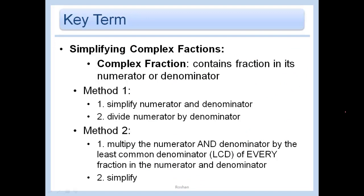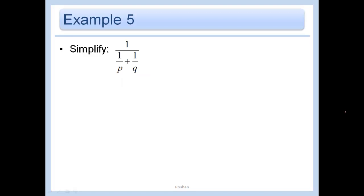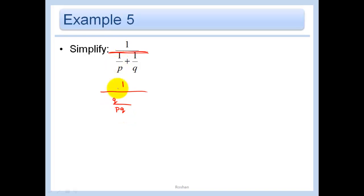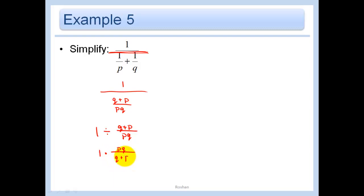Here are some rules for simplifying complex fractions — but this is just how you do it, so let's think about it. Try to simplify the top and bottom of your big fraction. We can't simplify 1 any further, but for the bottom, let's get a common denominator of PQ. How do I get from P to PQ? Multiply by Q — 1 times Q is just Q. Plus P. Our problem becomes 1 divided by the quantity Q plus P over PQ. Keep it, change it, flip it. Our final answer is PQ over Q plus P.